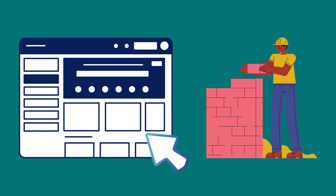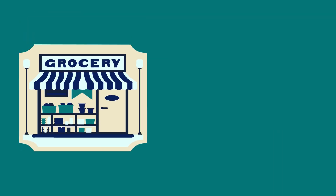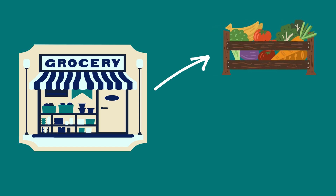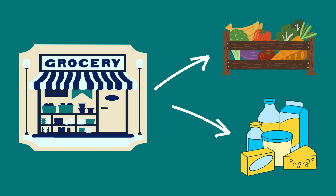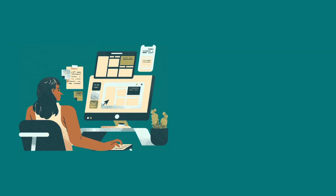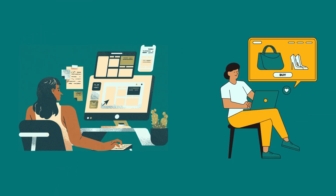To understand IA better, let's compare it to something we know: a grocery store. When you walk into a grocery store, everything is organized into specific sections — fruits and vegetables in one aisle, dairy products in another, and so on. This structure helps you find what you need without wandering aimlessly and wasting a lot of time. In the same way, information architecture ensures that a website or an app is well organized, helping users find what they're looking for as quickly as possible.